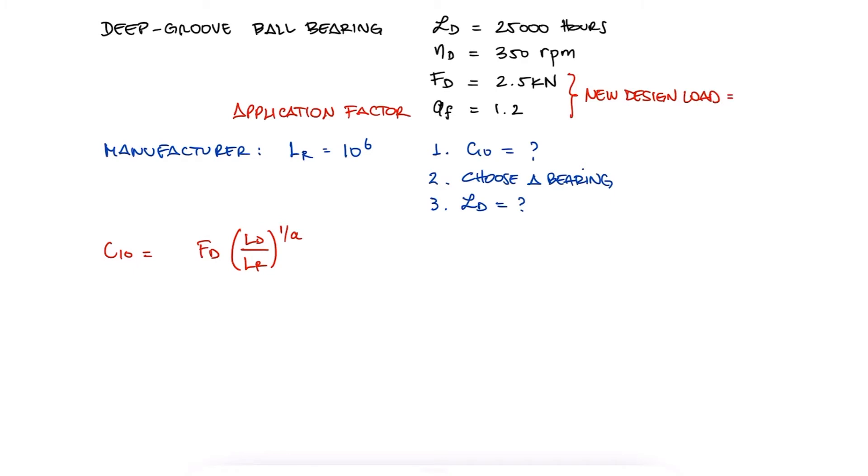which serves as a factor of safety for the design load. The second difference is that the manufacturer is rating its bearings for a number of cycles instead of a number of hours at a specific rotation speed.